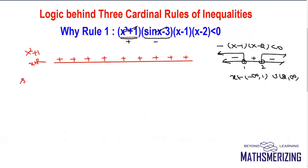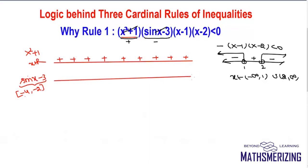Now sin x minus 3: the minimum value of sin x is minus 1, so minus 1 minus 3 is minus 4. The maximum value of sin x is 1, so 1 minus 3 is minus 2. Its value always lies between minus 4 and minus 2, therefore this expression is always negative — negative for all x in R.